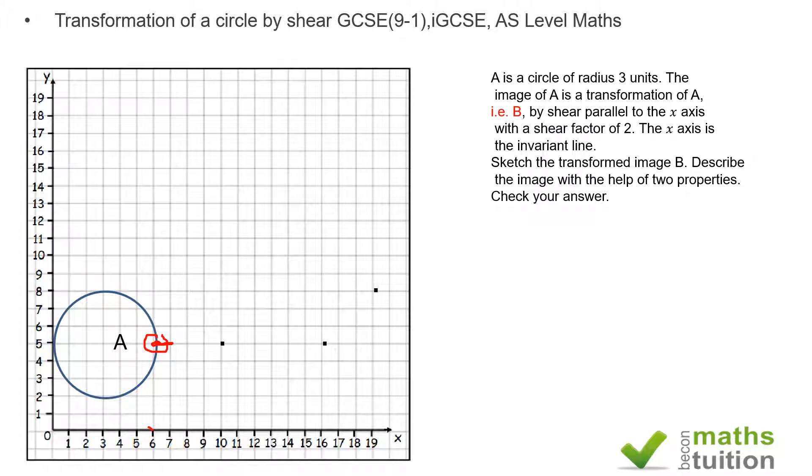Next I consider this point here at (3, 2). Because the shear factor is 2 and the distance from the x-axis to this point is 2, two times 2 gives me 4. So I expect 1, 2, 3, 4—so that point is going to be there.